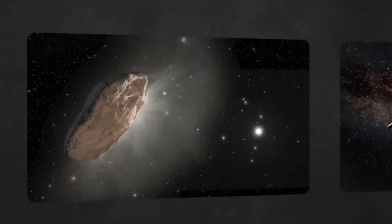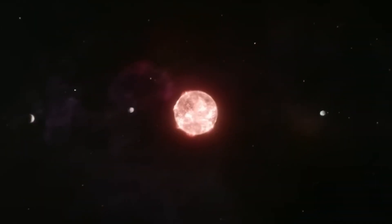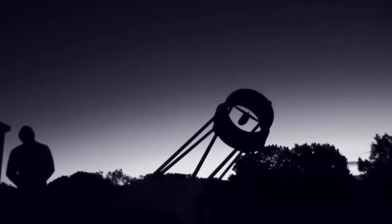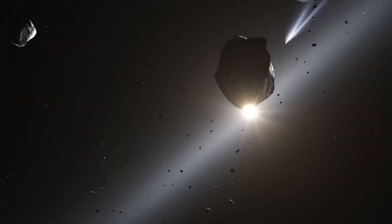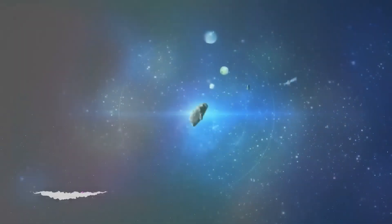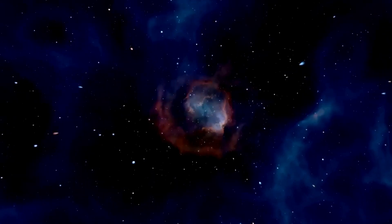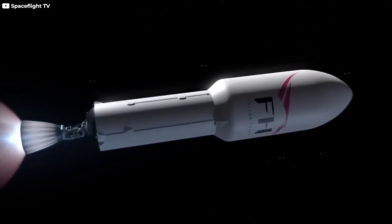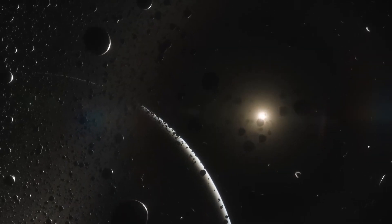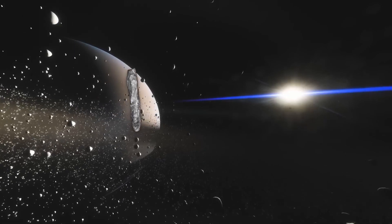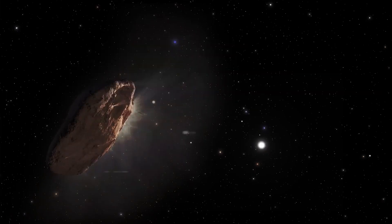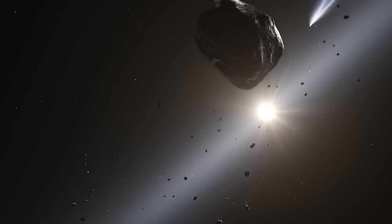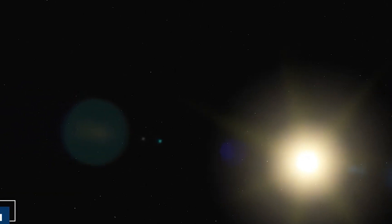As time went by, Oumuamua got farther and farther away from us, and it became tricky to study it anymore. Eventually, it just got too faint and too far away to see properly, leaving lots of questions still hanging in the air. The strange object known as Oumuamua, which comes from way outside our solar system, keeps puzzling scientists as they try to figure out where it comes from. At first, experts thought maybe Oumuamua came from a super bright star called Vega, which is part of the Lyra constellation. Vega has a bunch of leftover stuff spinning around it, which made it seem like a good guess for where Oumuamua started its journey. They thought maybe it took about 600,000 years for Oumuamua to travel all the way here.